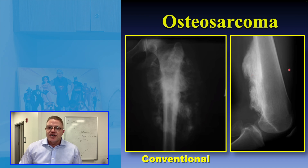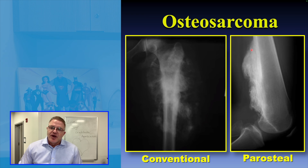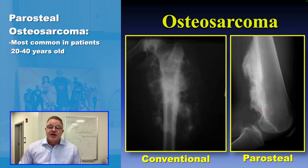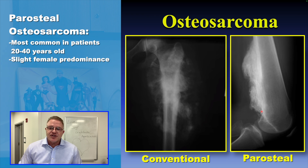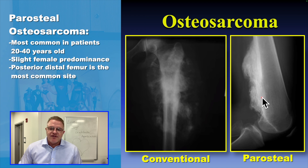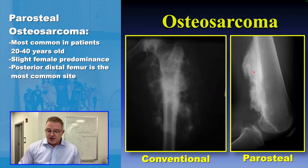The other image on the right is a parosteal osteosarcoma, which arises on the surface of the bone and usually affects patients between the ages of 20 and 40 with a slight female predominance. The posterior distal femur is the most common site — the back of the lower end of the femur, just above the knee. You can see this white density on the surface of the bone because it's a sarcoma that's producing bone.